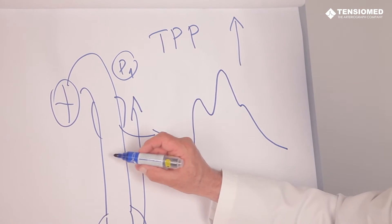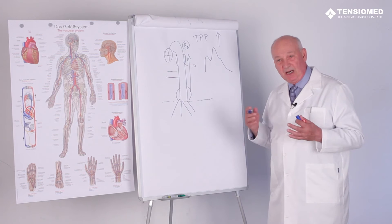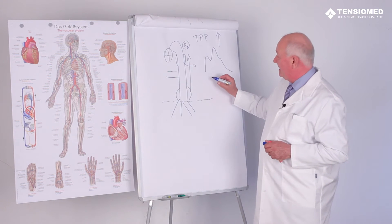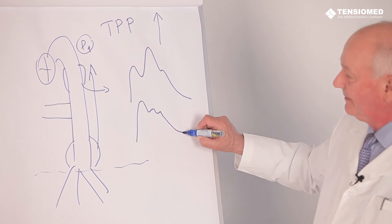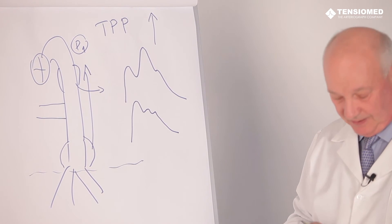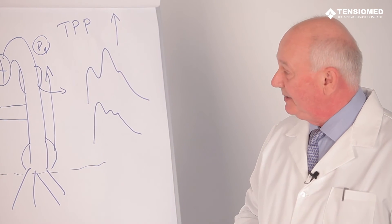On the contrary, when the vessels are dilated, mostly the small arteries and arterioles, in this case, the reflected wave amplitude will be much smaller, referring to the dilated peripheral vascular resistance and dilated arterioles.